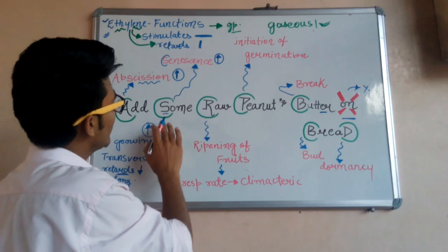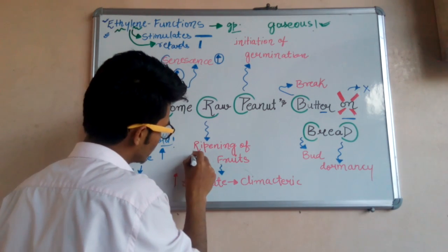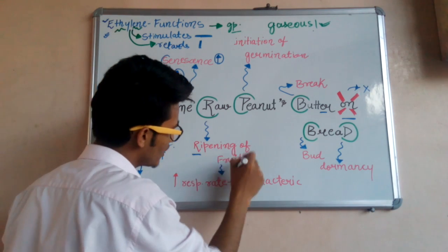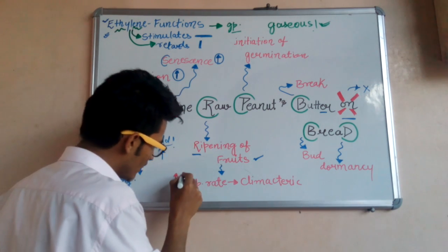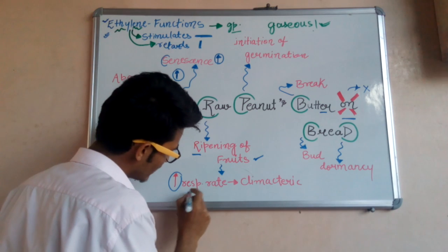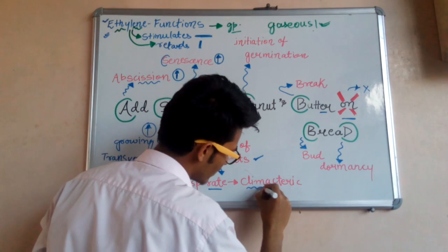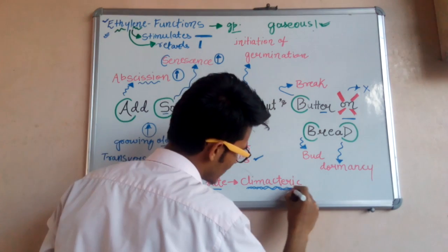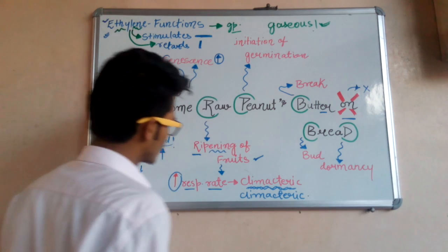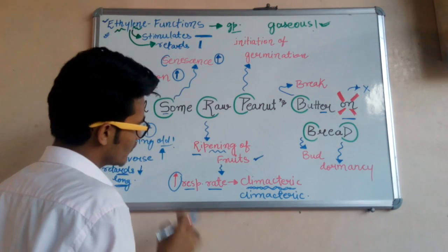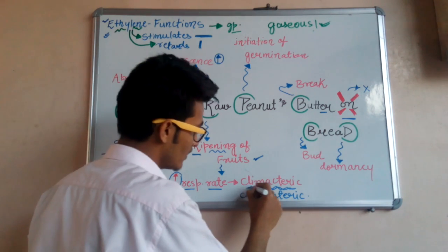'Raw' means ripening — so ethylene is also known as the fruit ripening hormone. Ethylene is responsible for the ripening of fruits. There is an increase in respiration rate of some fruits during ripening, and therefore these are called climacteric fruits.